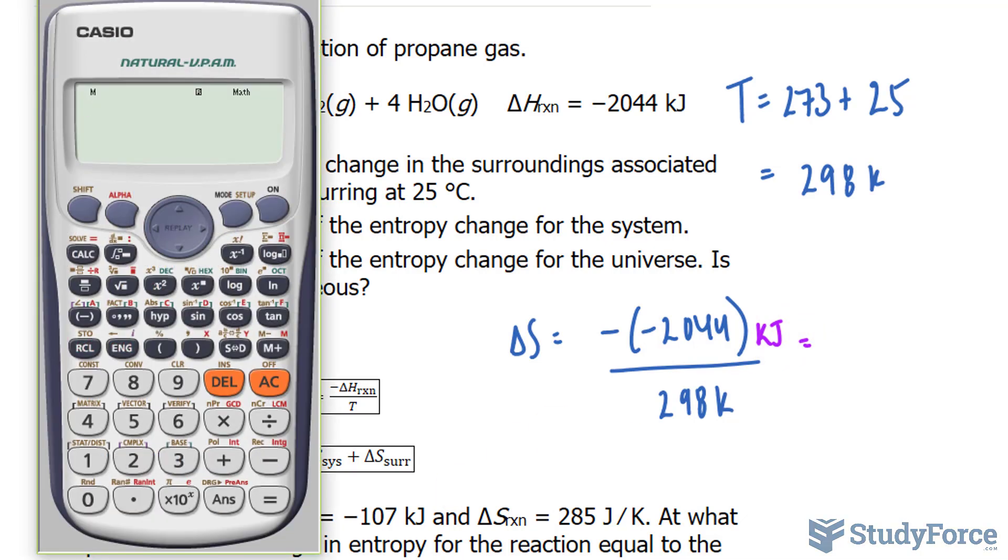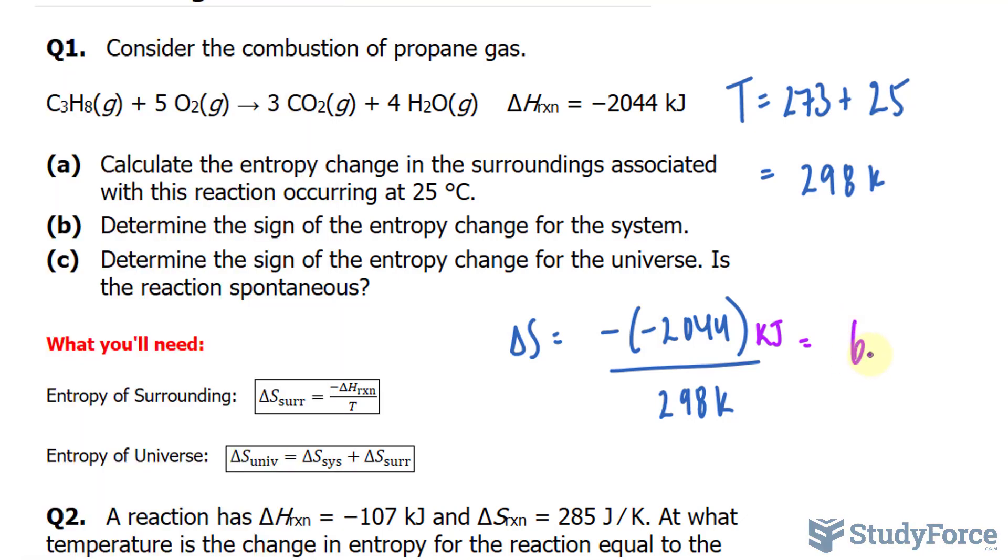Using our calculator, two negatives make a positive, so I'll write down the positive version of the numerator, divided by 298, and I get 6.859 kilojoules per Kelvin. And we need this to three significant figures, so I'll write down 6.86 kilojoules per Kelvin.